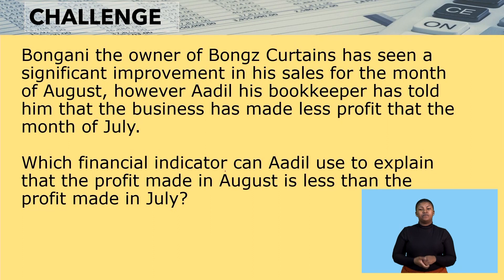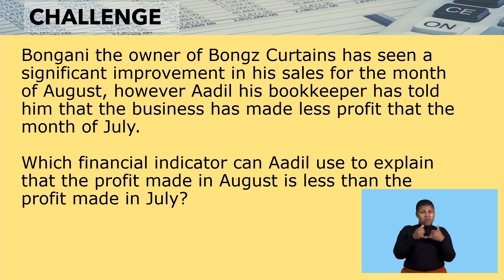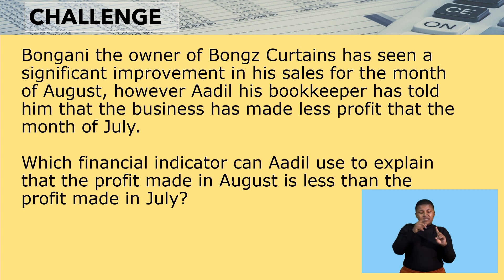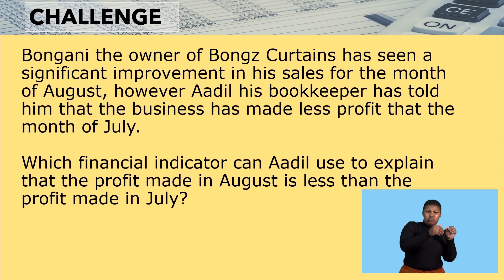I have a challenge question for you and it reads: Bongani, the owner of Bong's Curtains, has seen a significant improvement in his sales for the month of August. However, his bookkeeper has told him that the business has made less profit than in the month of July. Which financial indicator can be used to explain that the profit made in August is less than the profit made in July?